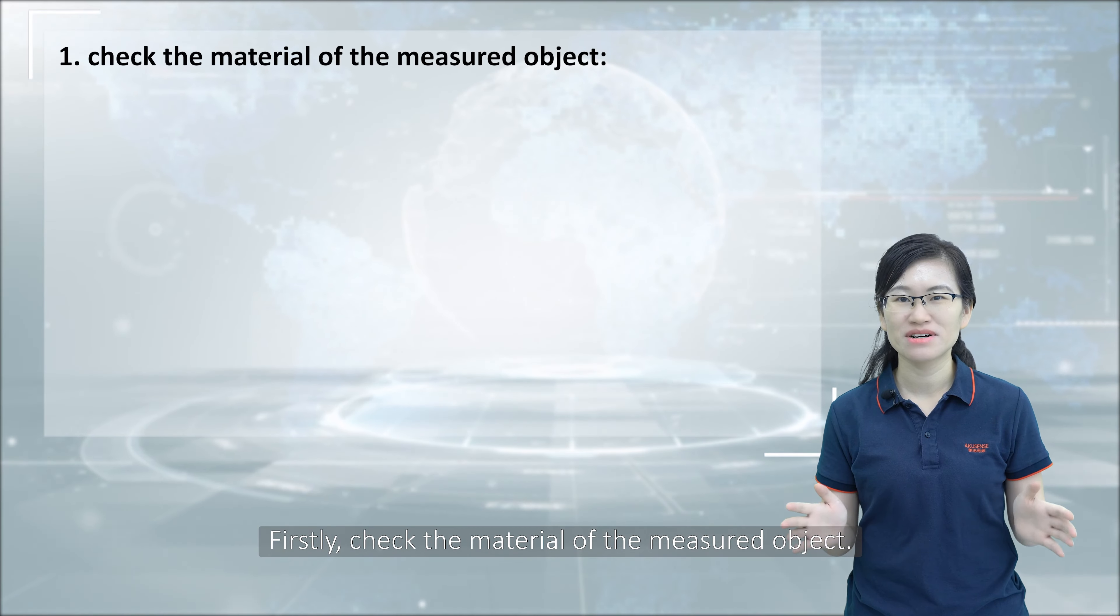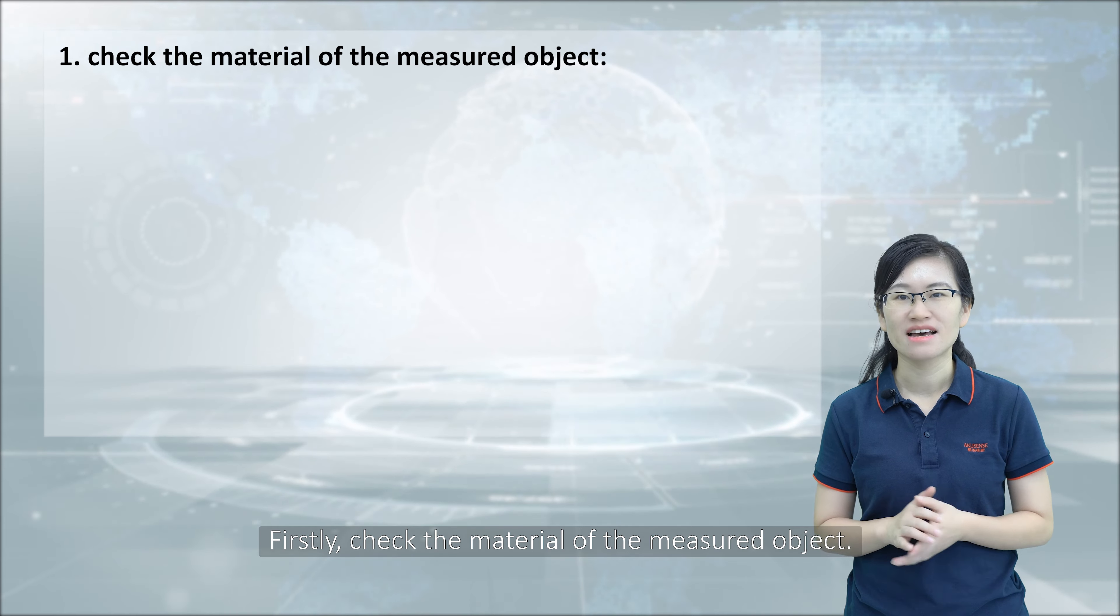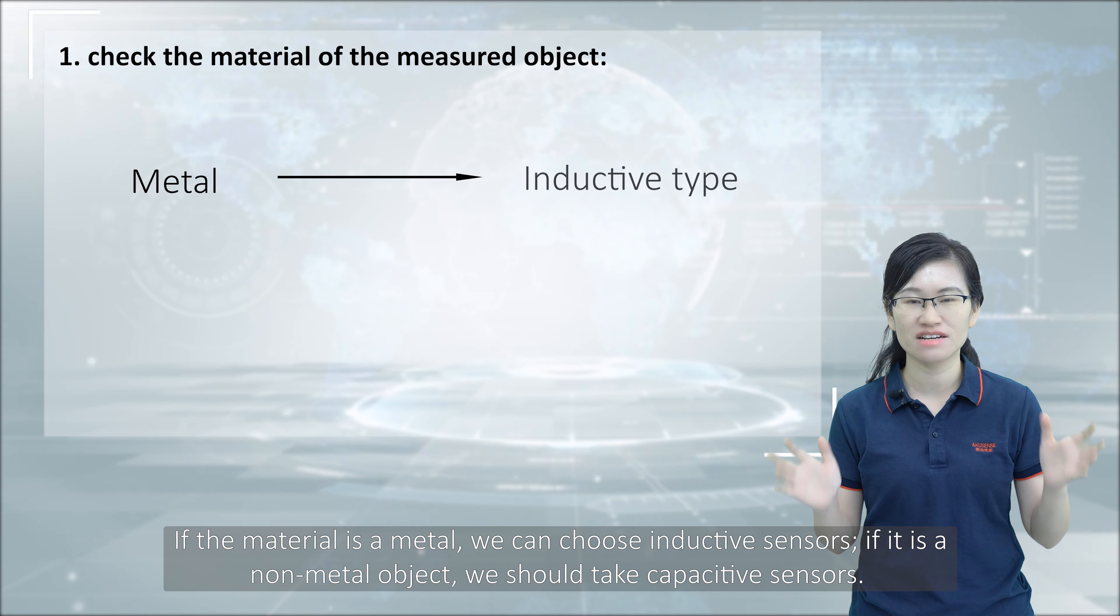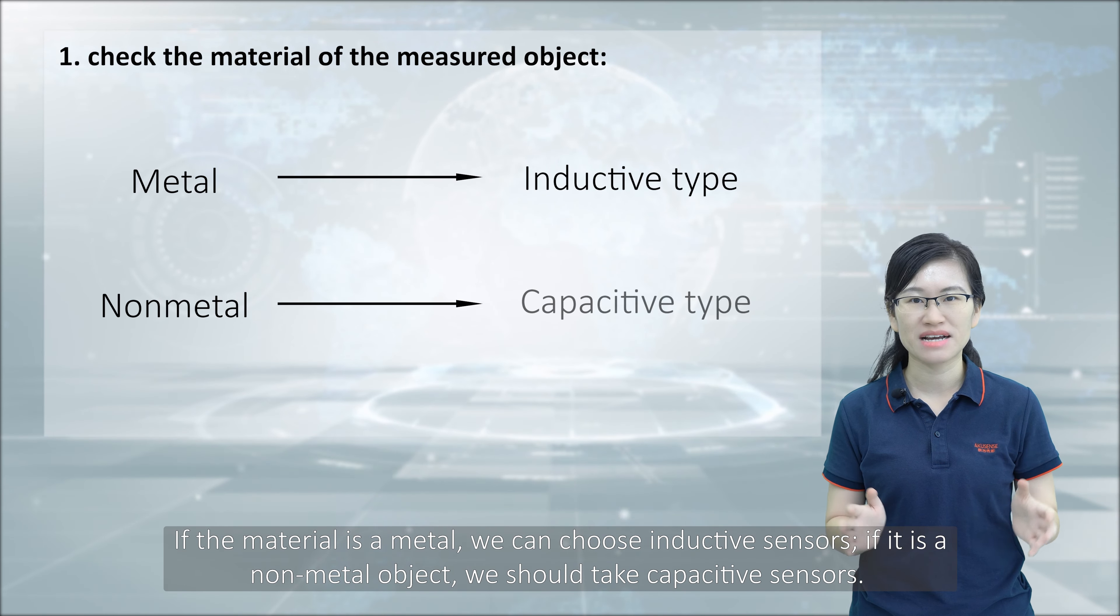Firstly, check the material of the measured object. If the material is a metal, we could choose the inductive sensors. If it is a non-metal object, we should take capacitive sensors.